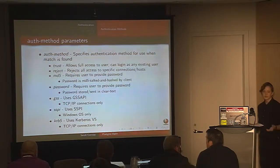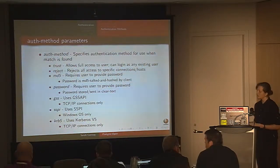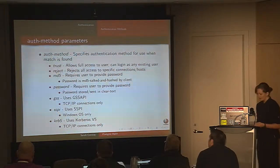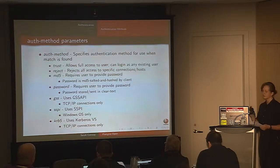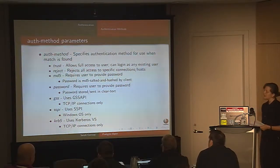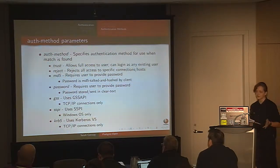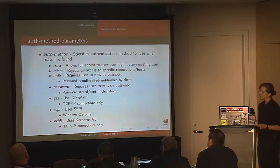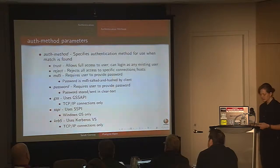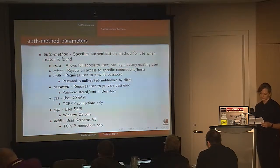These are all the different authentication types for pg_hba.conf. Trust allows full access — very insecure because you can log in as any existing user. Reject acts as a ban, rejecting access to specific databases, users, or IP ranges. MD5 requires the user to provide a password that is MD5 salted and hashed by the client. Password sends a password in clear text — deprecated because it's insecure. Peer checks for a match between client username and database username. Then there are various external server authentication methods such as GSSAPI, ident, krb5 for TCP/IP, SSPI for Windows only, LDAP, RADIUS, and PAM — these external methods can prevent password attacks like weak passwords, reuse of old passwords, and brute-force attacks.